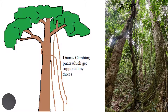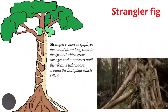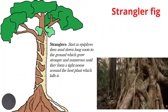Lianas are climbing plants that begin their life in the shade of the forest but grow upwards by climbing on other plants so that they can gain access to the sun. Sunlight plays a very important role in the characteristics of lianas.